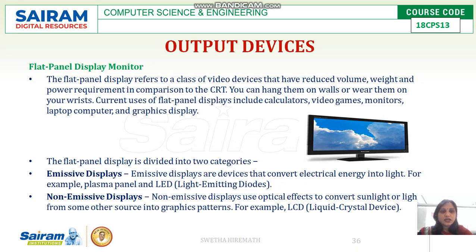Now, flat panel display monitors come in two categories: emissive displays and non-emissive displays. Emissive displays are devices that convert electrical energy into light. Whatever electric energy is passed to them, it is converted into light, pixels are formed, and the image is displayed on the monitor.